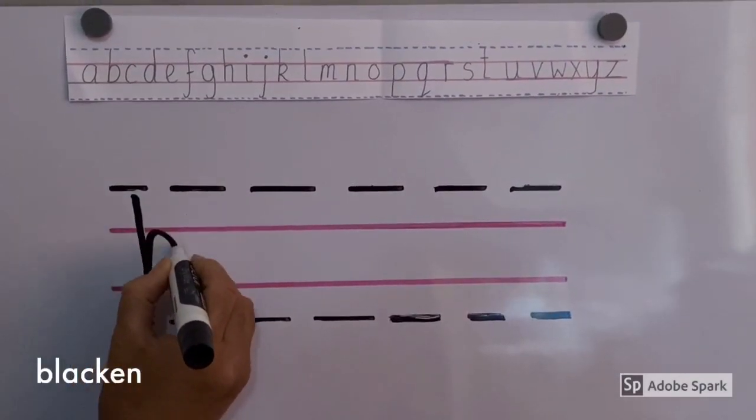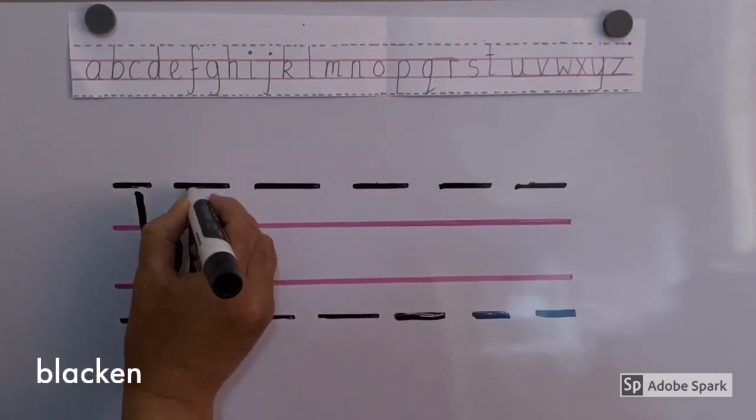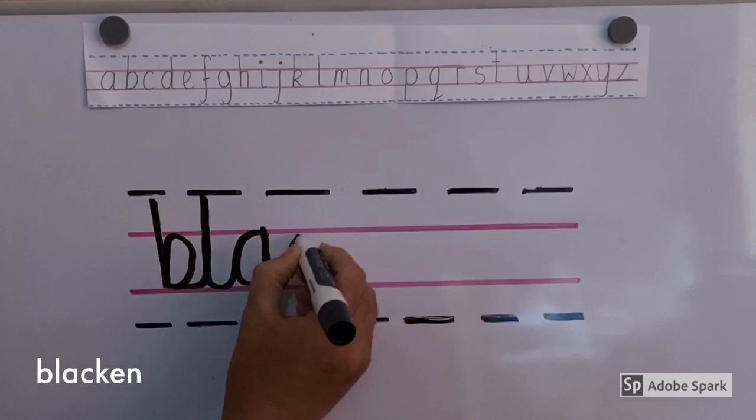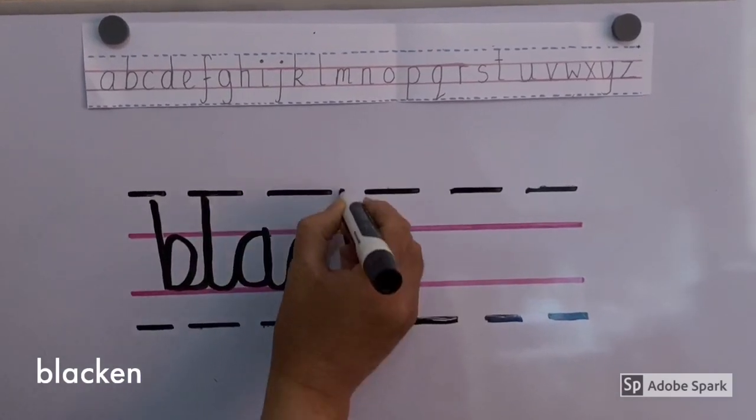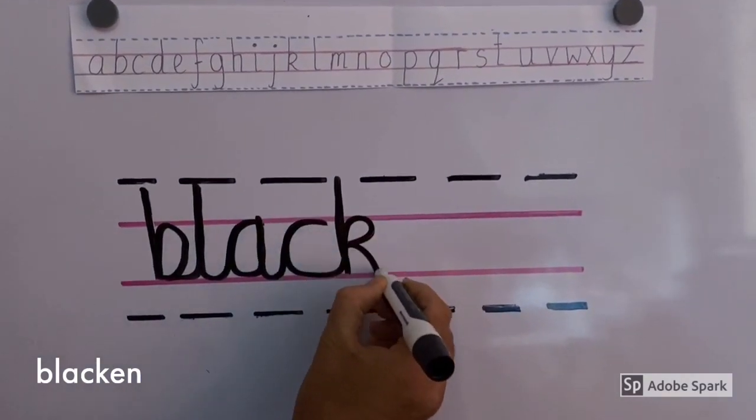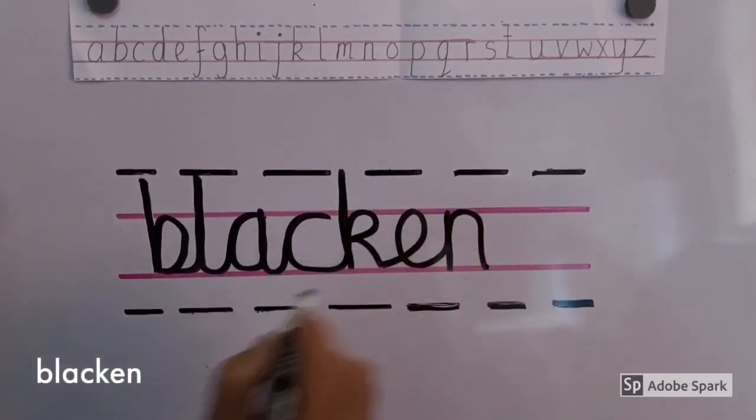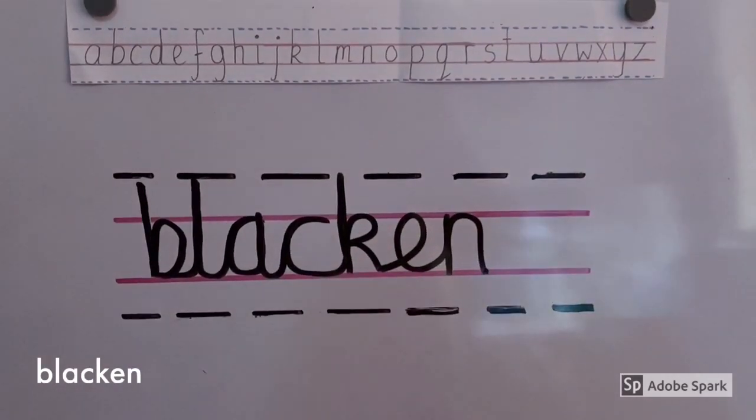Blacken. B, L, A, C, K, E, N. Blacken. Blacken means to make something black or very dark. Blacken.